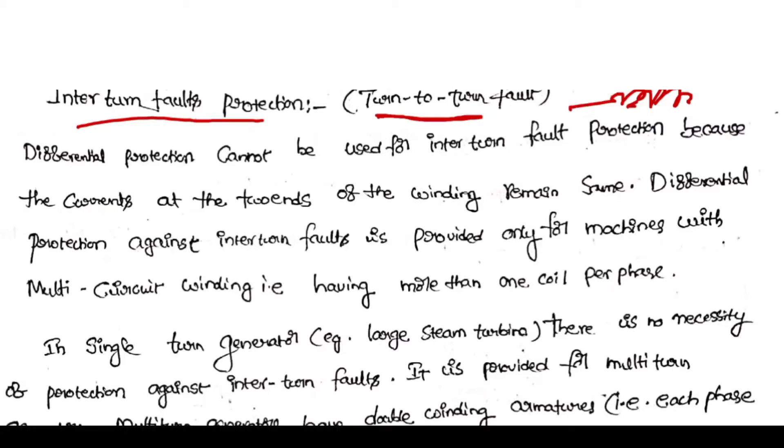Merz Price circulating current scheme, that is differential protection, cannot be used for inter-turn fault protection because the currents at the two ends of the winding remain same. The two ends of the winding will be the same.